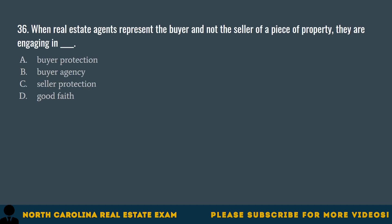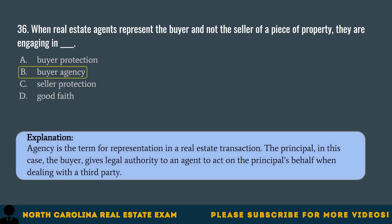Question 36. When real estate agents represent the buyer and not the seller of a piece of property, they are engaging in A. Buyer protection. B. Buyer agency. C. Seller protection. D. Good faith. The correct answer is B. Buyer agency. Agency is the term for representation in a real estate transaction. The principal, in this case the buyer, gives legal authority to an agent to act on the principal's behalf when dealing with a third party.